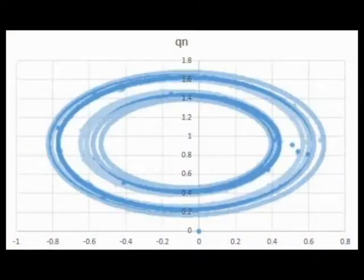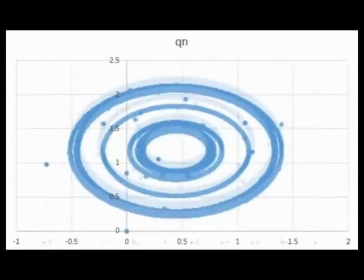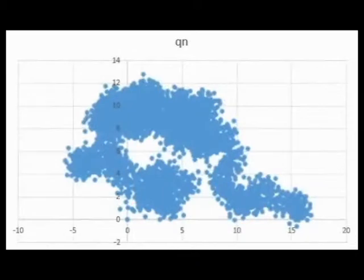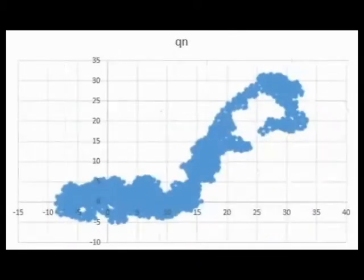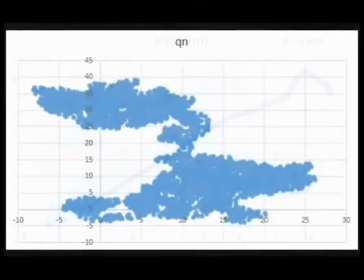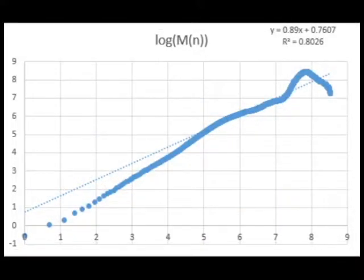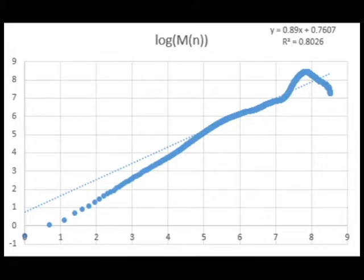Let's look at the 0-1 test for chaos for the Henon map at alpha equals 1.4 and beta equals 0.3. The result is clearly chaotic. Looking at the p versus q graph, we clearly see that the result is not regular. This is confirmed when we take the log of m and see that the result is largely linear. In fact, the slope is 0.89, very close to 1. This confirms that the Henon map is, in fact, chaotic at this point.